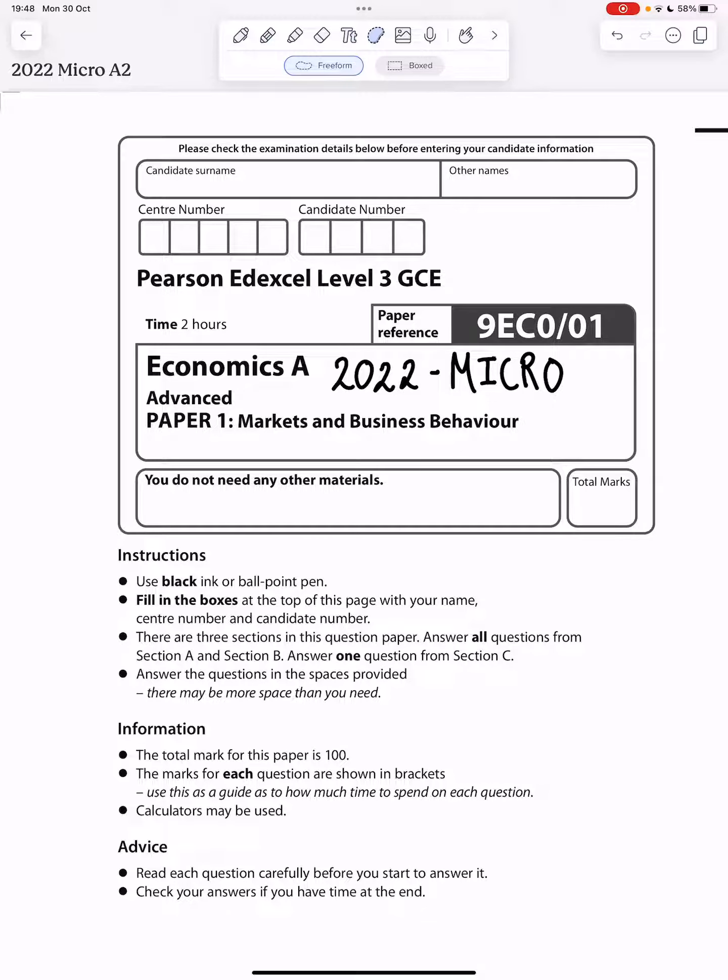Hello guys and welcome back to another video. Today we're going to be looking at section A, a micro paper from 2022. This is the last publicly available micro paper for the Edexcel exam board. The others are hidden and not possible to go through. This is going to be the last section A until the 2024 exams are out.